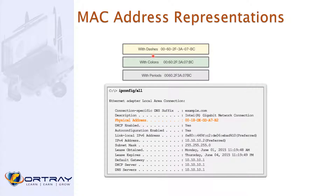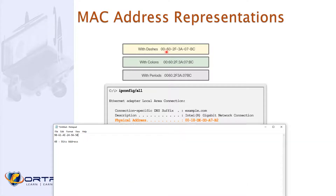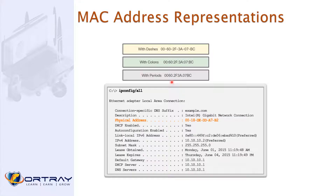Sometimes you see the MAC address written differently depending on the vendor. Microsoft may write it one way, while other vendors write it differently. Some vendors use a colon separator, some use a dash, and some write it in two-byte groupings. Regardless of representation, it is always six bytes total — the format is just different. You can see this in 'ipconfig /all' under the physical address.